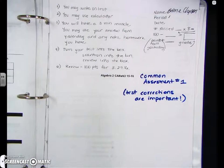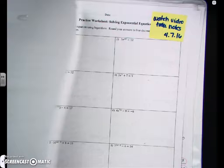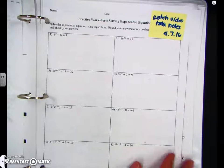Test corrections are important. If you haven't taken your test, there's only about four of you who still haven't taken it. Test corrections are important—you can earn half of your points back.